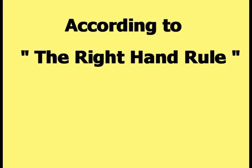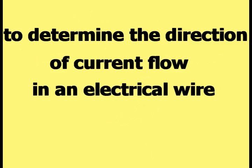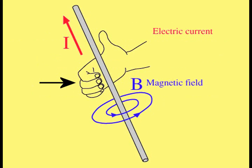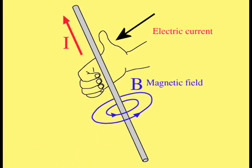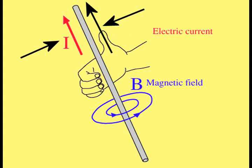According to the right hand rule, to determine the direction of current flow in an electrical wire, the fingers of the right hand should be curled around the wire so that they point in the same direction that the magnetic field lines curl around the wire. The thumb should be extended out from the hand and along the wire. The direction that the thumb is pointing is the direction of current flow within the wire.